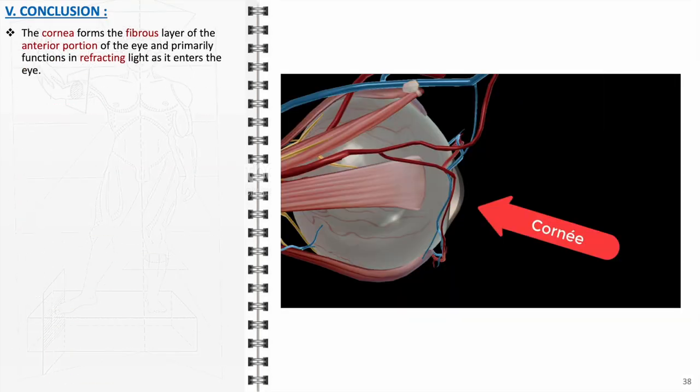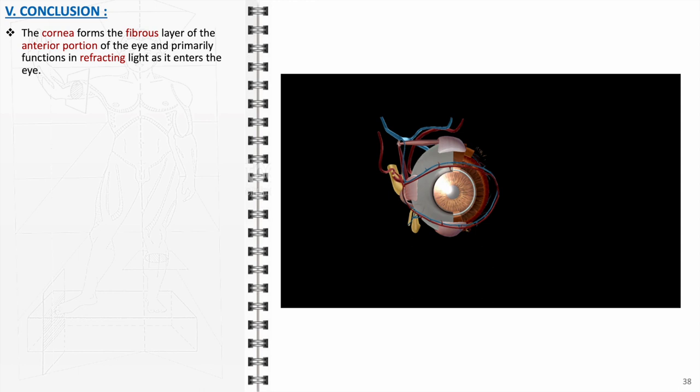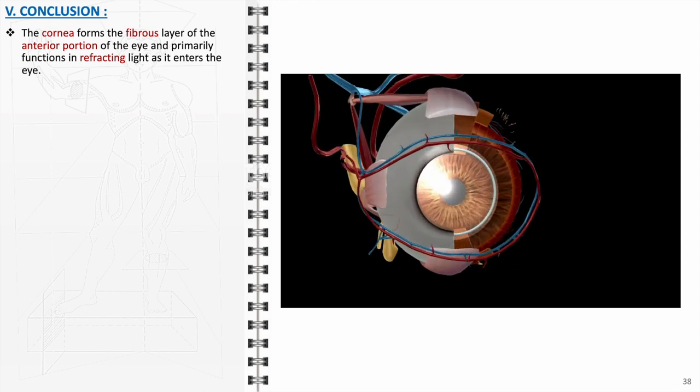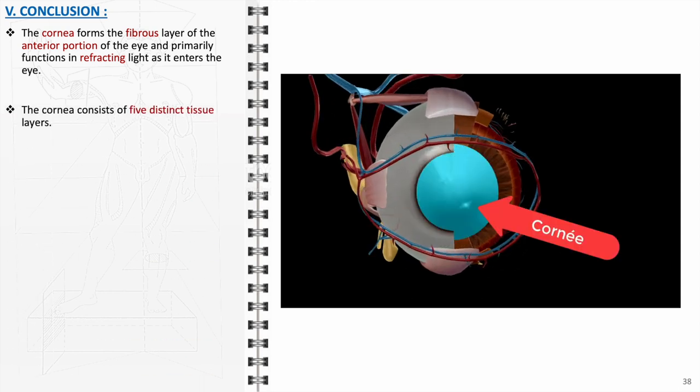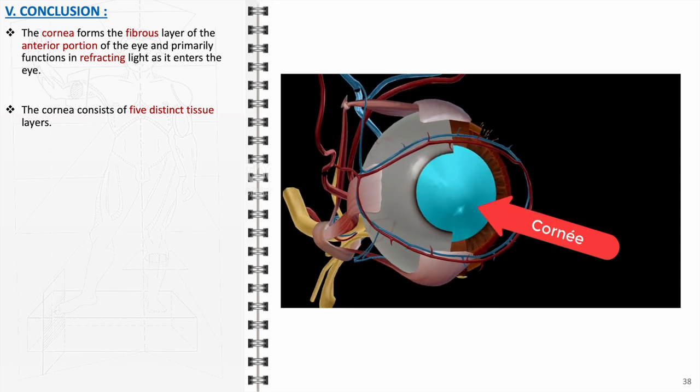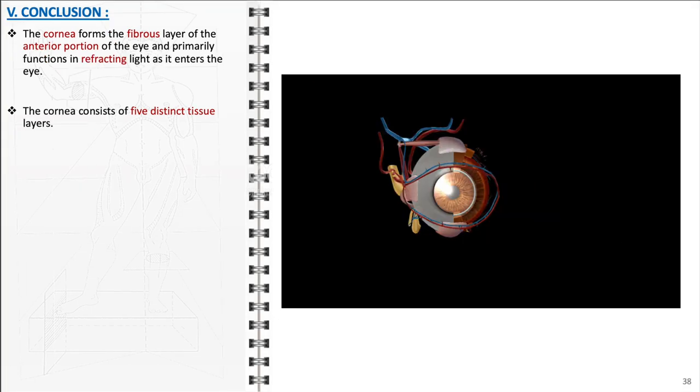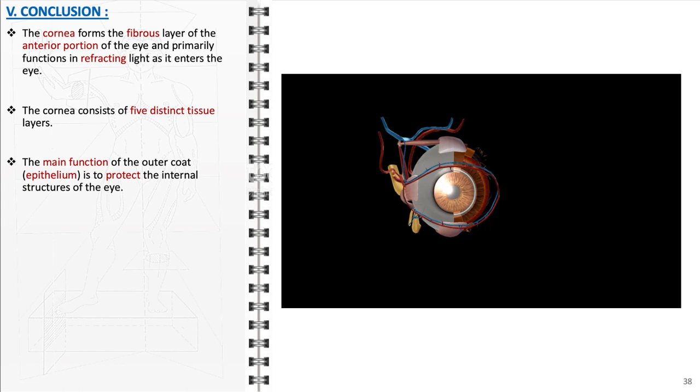To summarize. The cornea forms the fibrous layer of the anterior portion of the eye and primarily functions in refracting light as it enters the eye, playing a crucial role in vision. The cornea consists of five distinct tissue layers, each contributing to its overall function and structural integrity. The main function of the outer coat is to protect the internal structures of the eye.